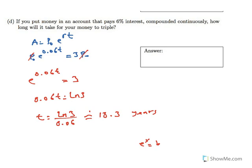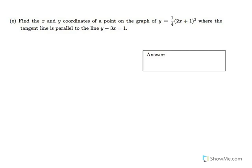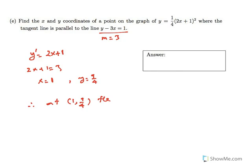Part E: at what point on the graph of the function is the tangent line parallel to this line? The slope of the given line is 3. We find the derivative of the function, which is 2x plus 1 times (x plus 1). Setting it equal to 3, we find x equals 1. Plugging 1 into the original function gives y equals 9 over 4. Therefore, at the point (1, 9/4) the tangent line is parallel to y equals 3x plus 1.